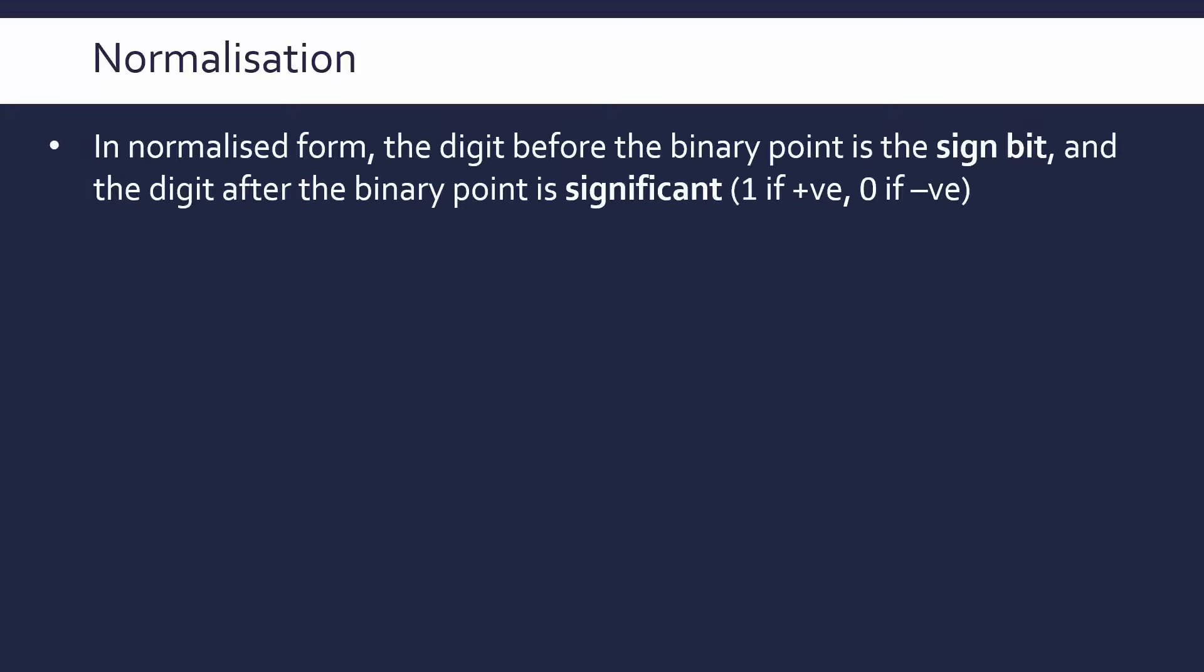So, let's talk normalisation for binary though, we don't care about decimal from now on, let's look at binary only. So, in normalised floating point notation, the digit before our binary point is our sign bit, assuming we're doing things in 2's complement of course.